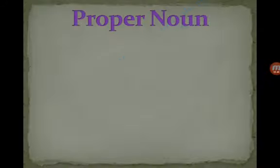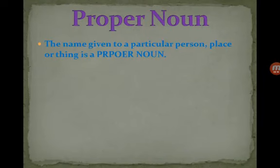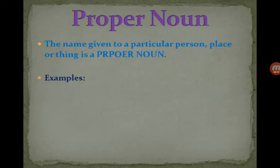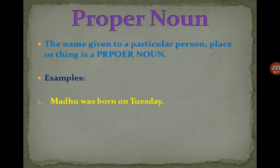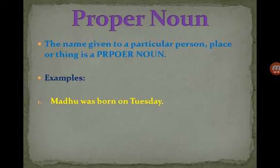Now we are talking about proper noun. The name given to a particular person, place, or thing is called a proper noun. For example: Madhu was born on Tuesday. Madhu is the name of a particular person, and Tuesday is the name of a particular day. So Madhu and Tuesday are proper nouns in this sentence.